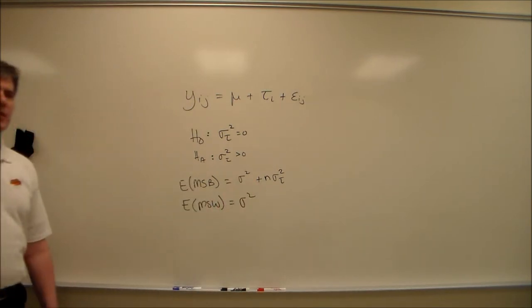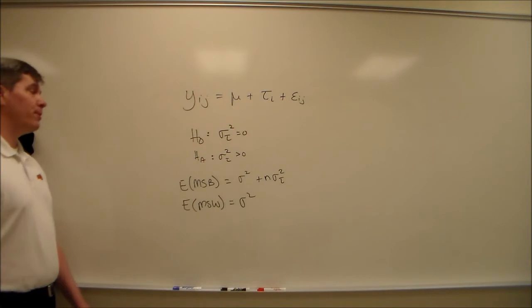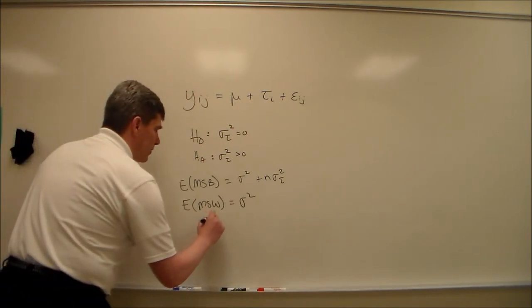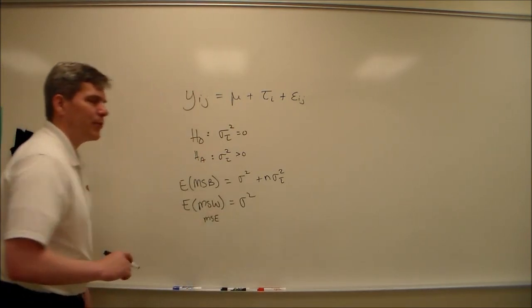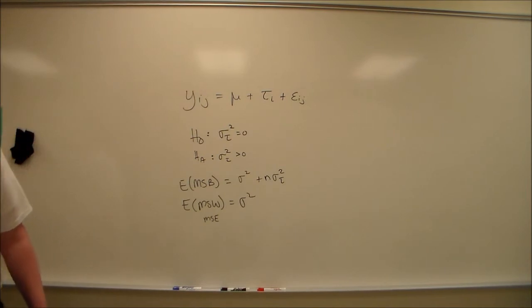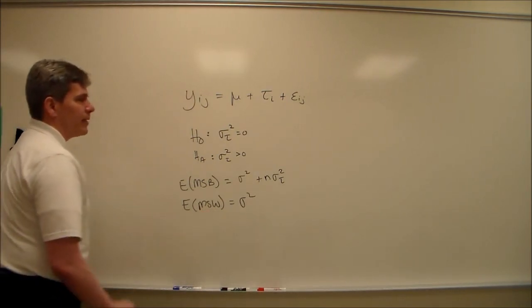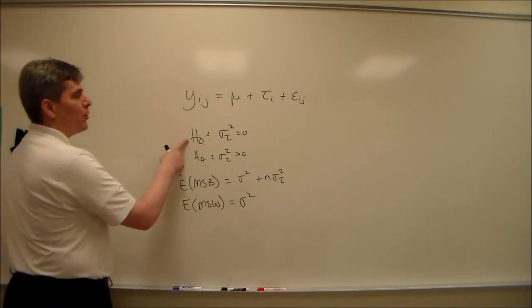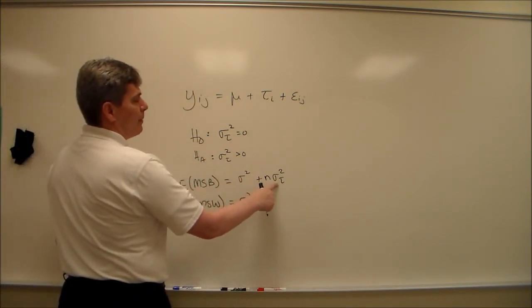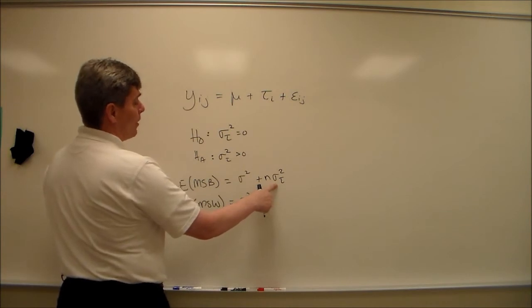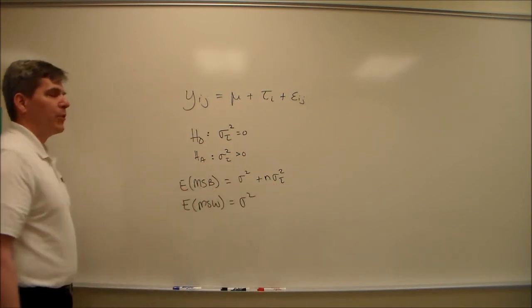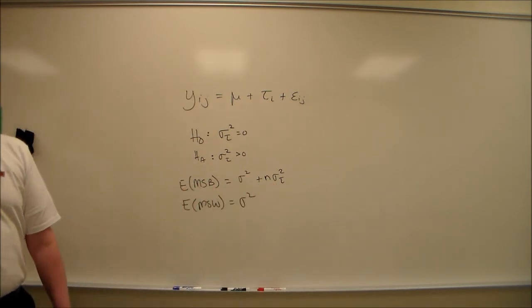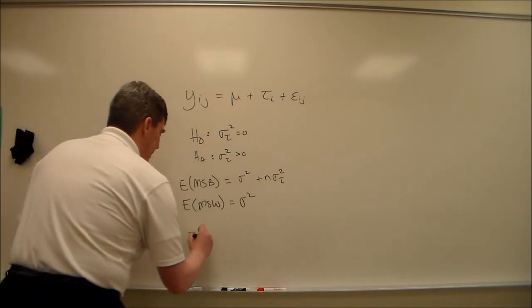As always, expected mean squared error, the MSW, and again, I will, on the test, sometimes write MSE instead of MSW. That is just sigma squared, as always. And notice that if the null hypothesis is true, then n times sigma squared tau is equal to zero, and the expected mean squared between is equal to the expected mean squared within. So that tells us that our F statistic is going to be mean squared between divided by the mean squared within.